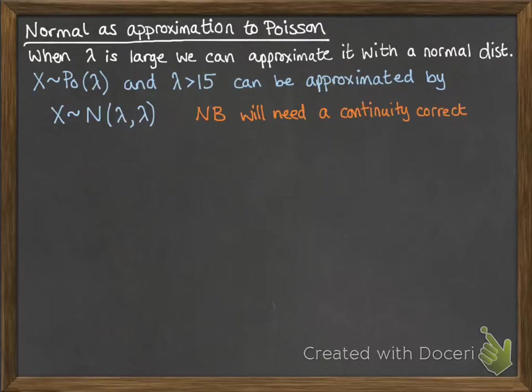Remember that we are changing from a discrete distribution to a continuous one, so we're going to need a continuity correction. If you can't remember how to do that, I suggest you go look up the video of approximating the binomial with a normal distribution and have a little bit of a revision of how to do that.